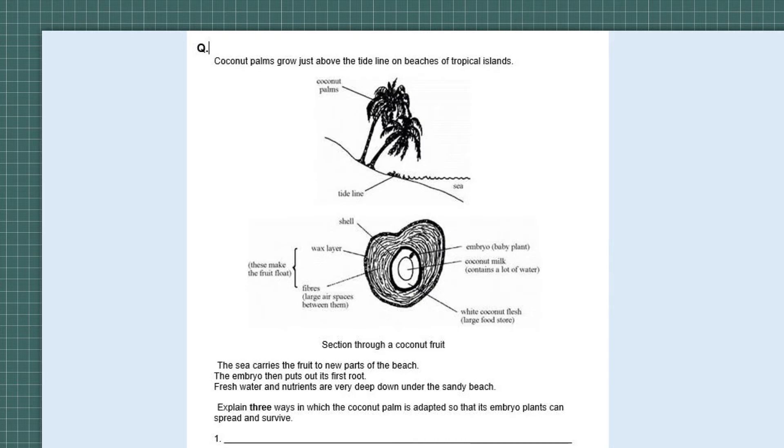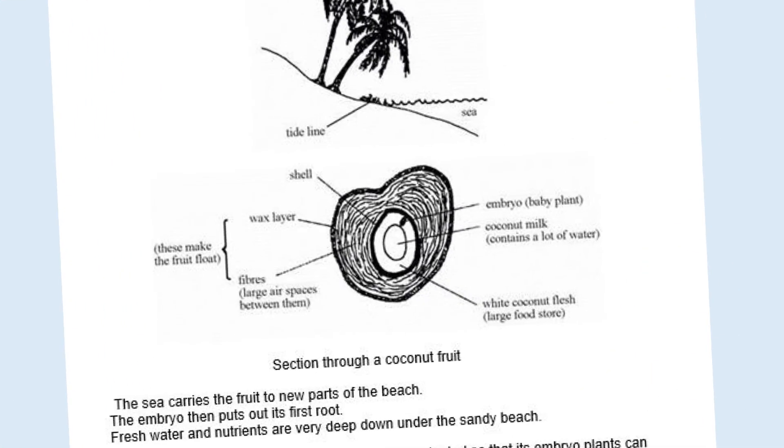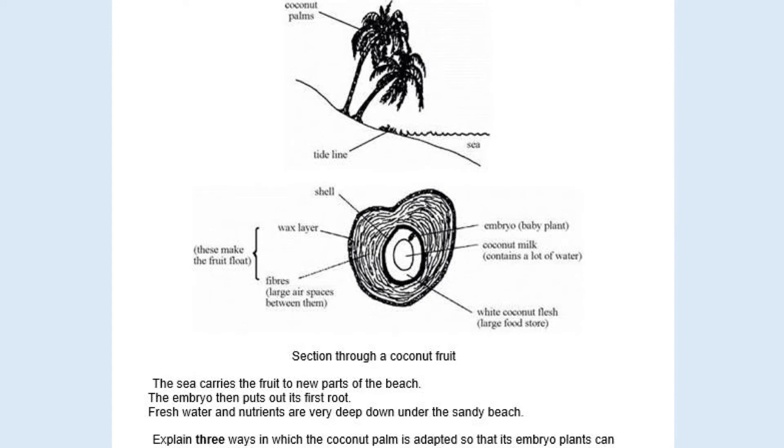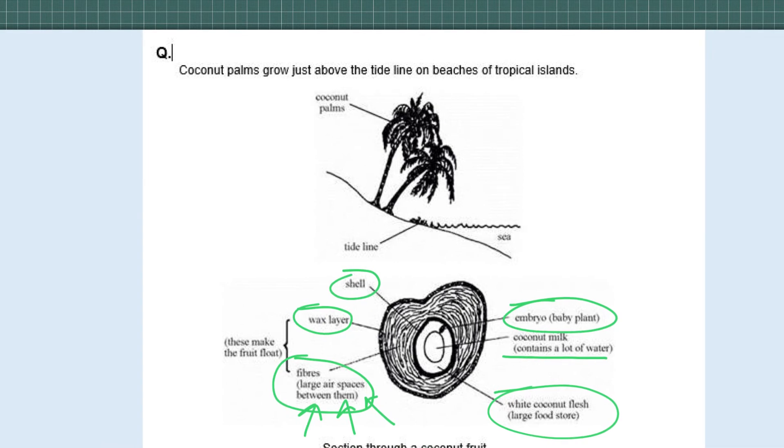This next question is a bit harder and it's about coconut palms. It tells you that they grow just above the tide line on beaches of tropical islands. They then give you lots of information of a section through a coconut fruit, and you can see that they've got coconut milk in the middle, an embryo or baby plant, a shell that's hard, a waxy layer, and then fibers with large air spaces in between them, and white coconut flesh which is a large food store. As it says in the question, the coconut palms grow just above the tide line, so the coconuts are going to fall down and fall into the sea and then probably spend a period of time drifting on the sea currents to other beaches.